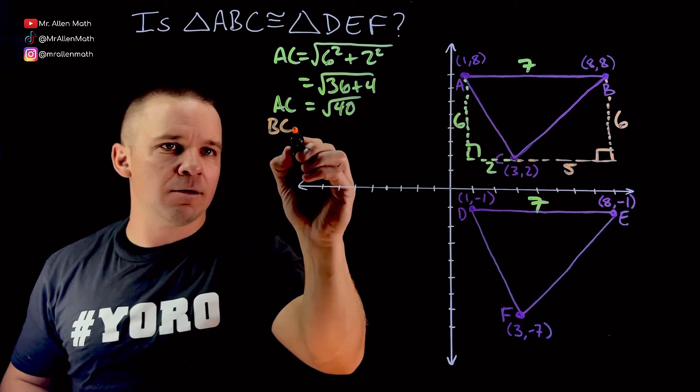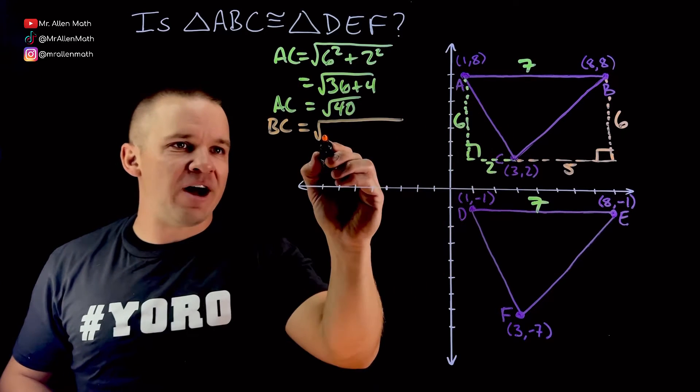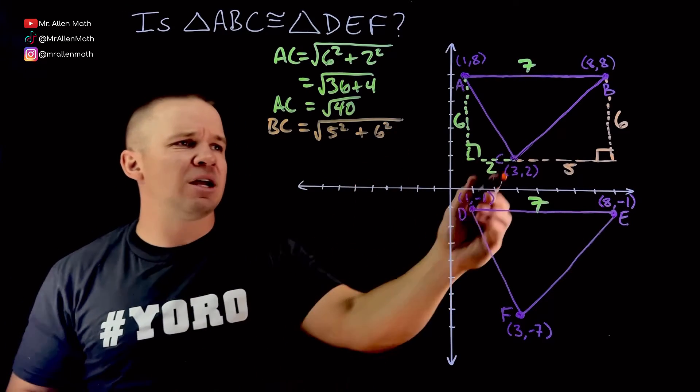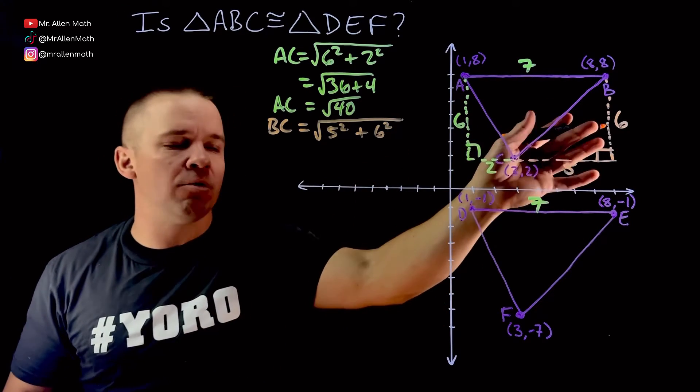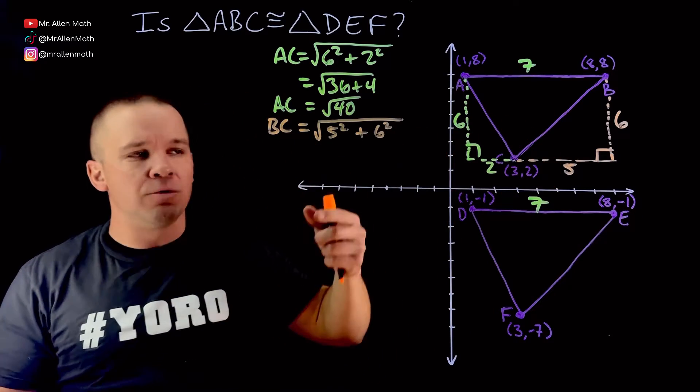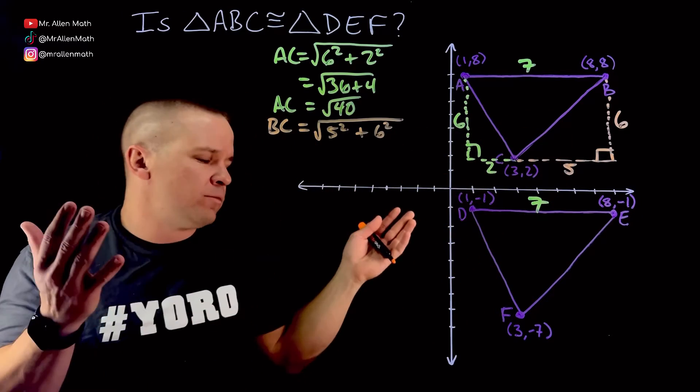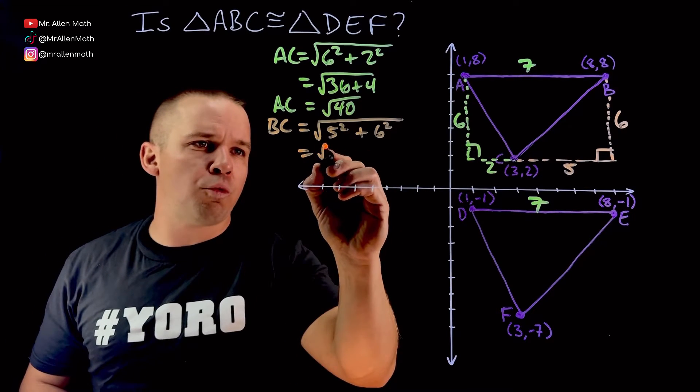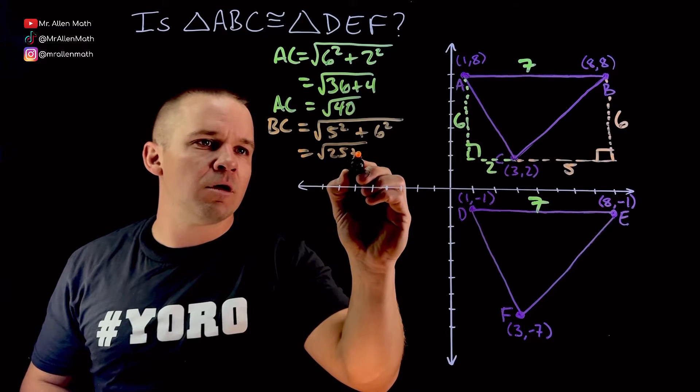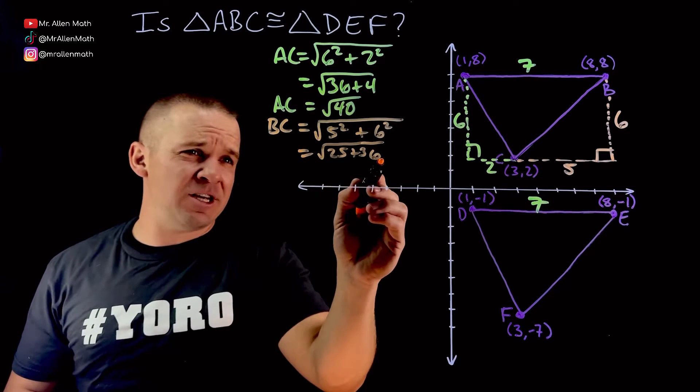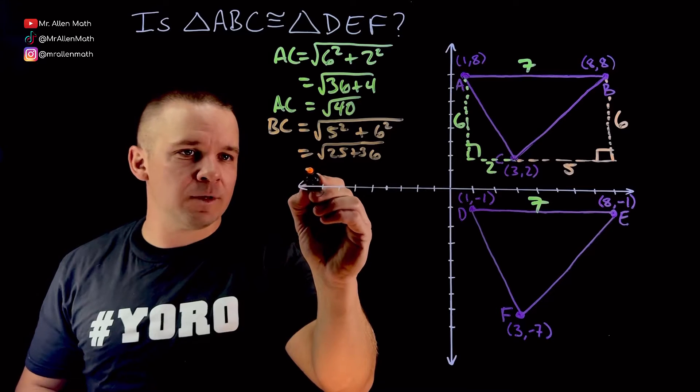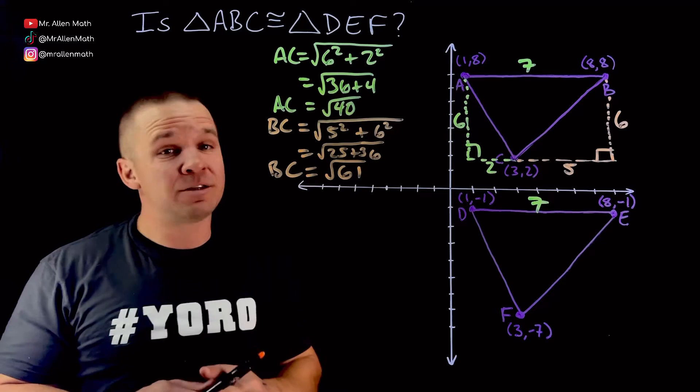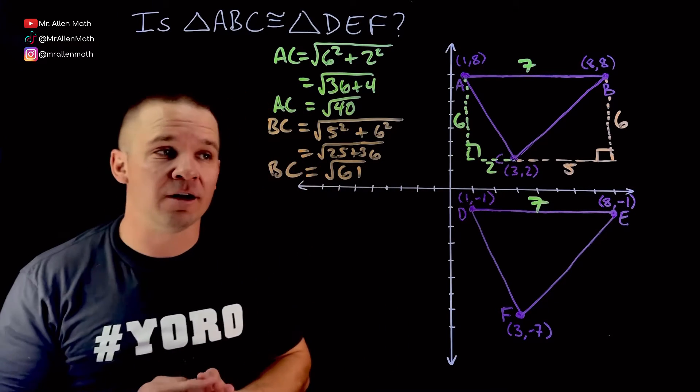So I got BC equals square root of 5 squared plus 6 squared. Now you could also maybe set this up as x or y or a, b, whatever you want to do, and solve it. Up to you. But I'm going this route because I'm making the video. Now I've got square root of 25 plus 36, so that's going to be 61. So square root of 61, and that's not going to break down at all. Not that I was going to do it in the first place because it's a waste of time in this situation.